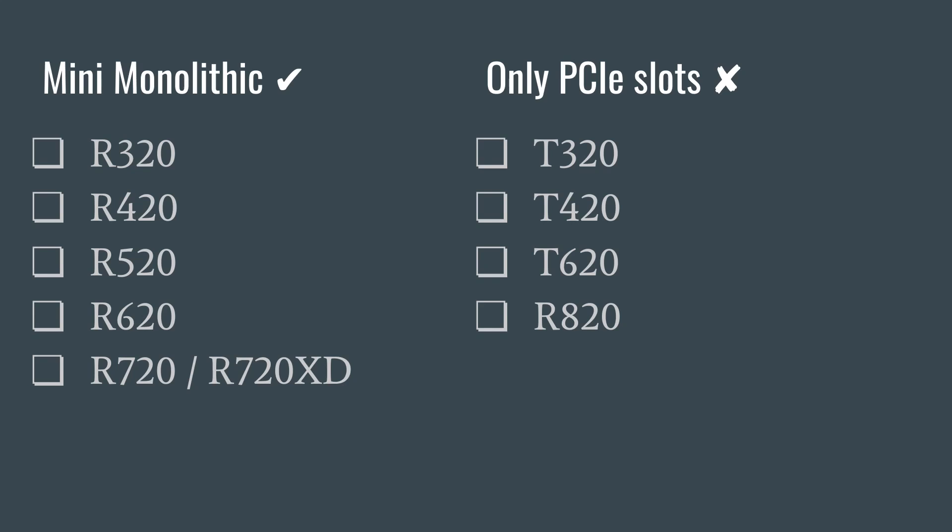If your server does not have a mini monolithic slot, then you're going to have to choose a standard PCIe HBA SAS controller. For that, I'm going to refer you to my other video that compares a variety of HBA SAS controllers and will guide you to the right choice — you should see a card in the upper right corner, so go ahead and click on that.